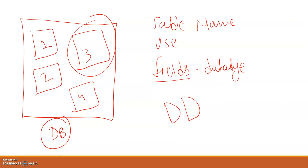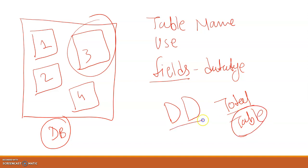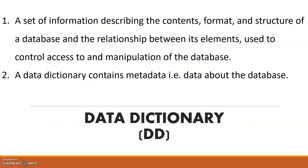Metadata of your database means it describes your database — first the total number of tables, and after that the description of each table. The data dictionary is a set of information describing the contents, format, and structure of a database and the relationships between its elements.